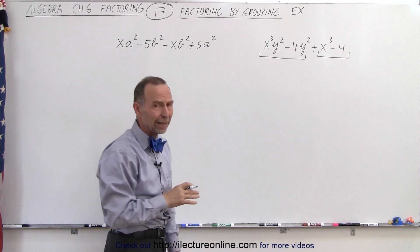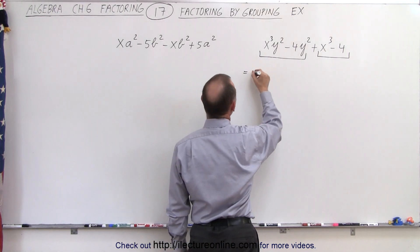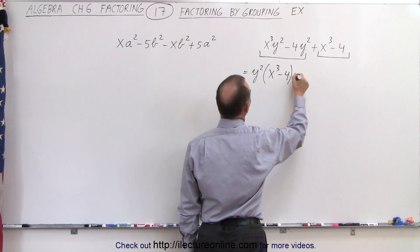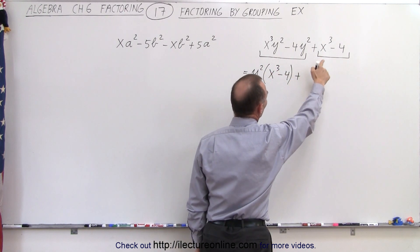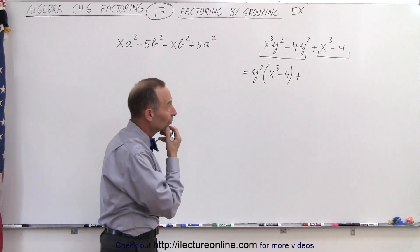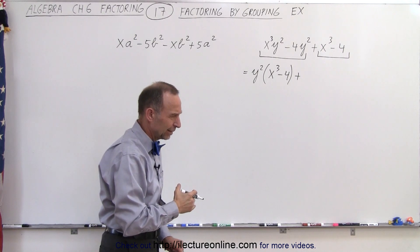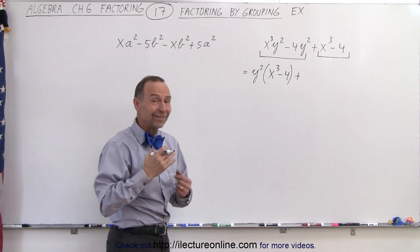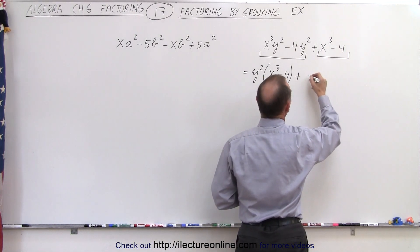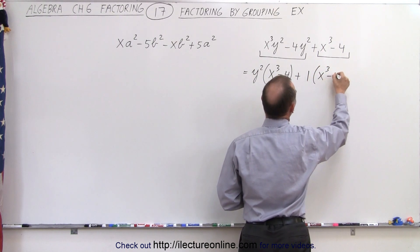Well, let's see what happens when we factor out a y-square from the first two. So this can be written as y-square times x-cubed minus four, plus—notice we have an x-cubed minus four which looks exactly the same as that. So what we're going to do to make it look the same is factor out a one, and write this as plus one times x-cubed minus four.